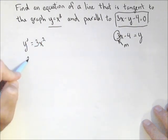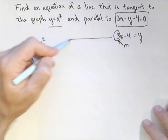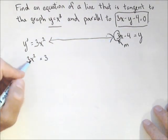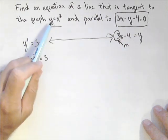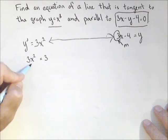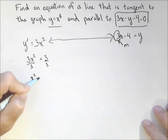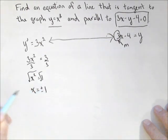Now, we know that we want 3x squared to be equal to 3. We're basically getting our two slopes equal to each other. Now, the reason I'm doing this is we have to find out the points on y equals x cubed where the slope is going to be 3. Now, if I solve this, I divide both sides by 3. I get x squared equals 1. Square root both sides. And I'm going to get x equals not just 1, but it could be plus or minus 1.